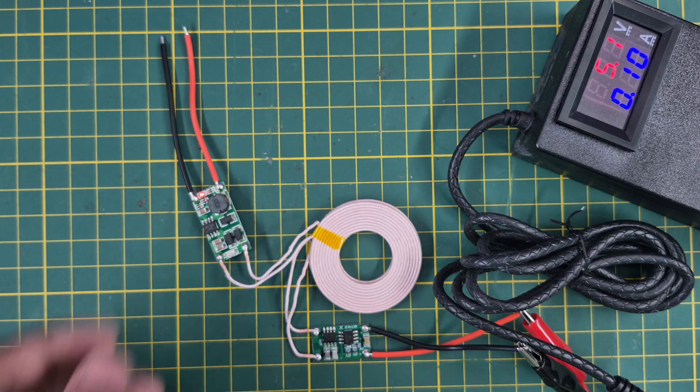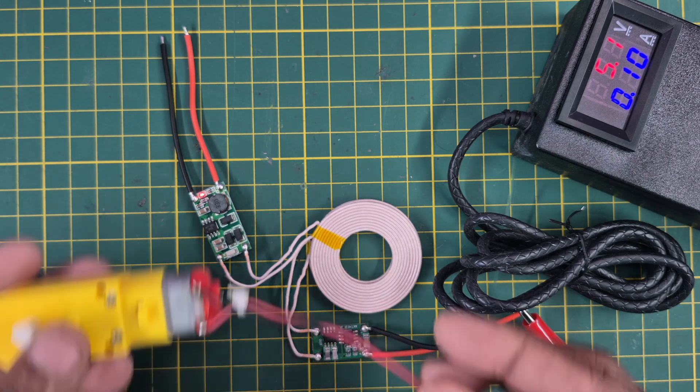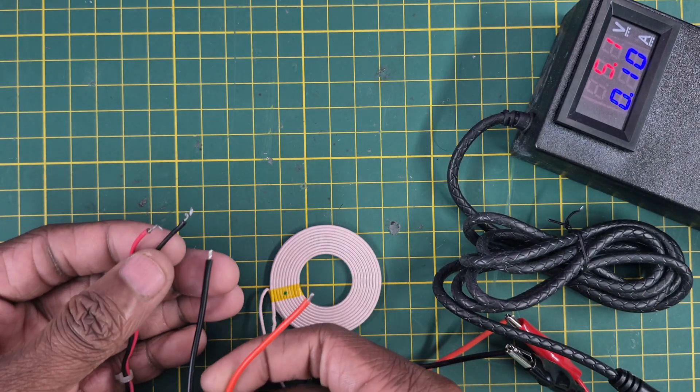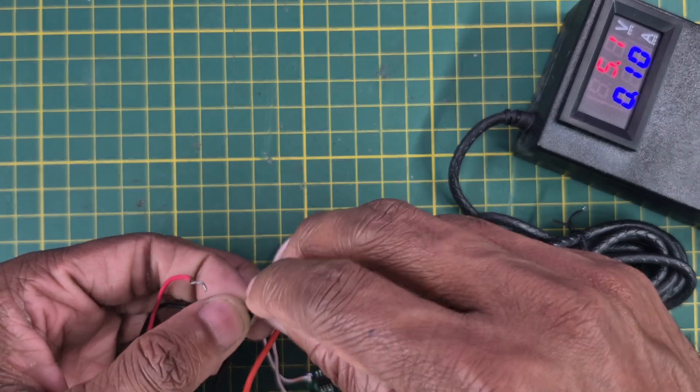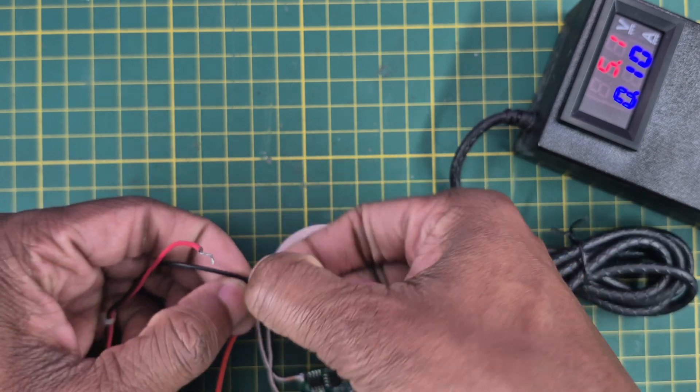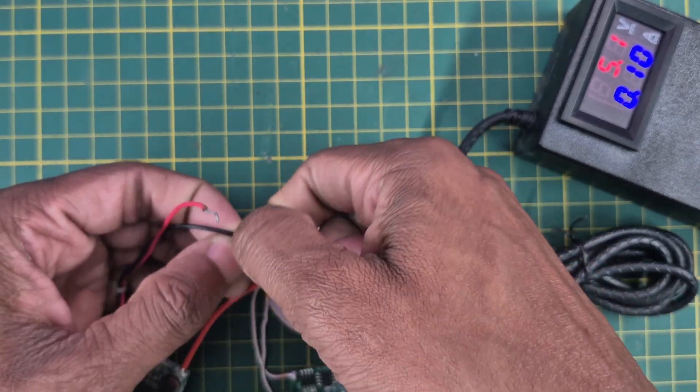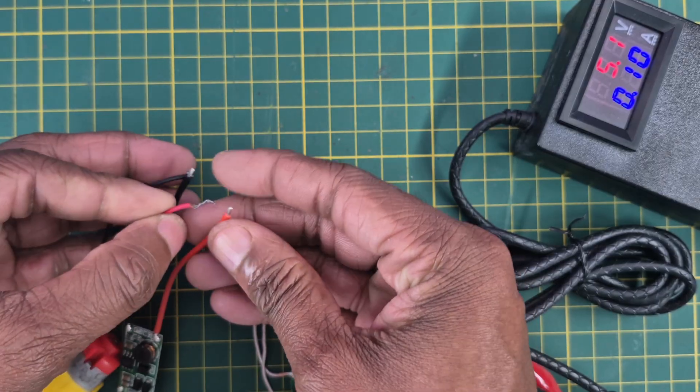Here I will take this normal 3 volt motor and I will connect it to this receiver. I am simply connecting these wires here so that we can test this.